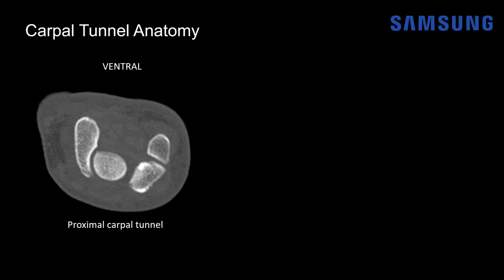Let's start by looking at the CT appearance of the carpal tunnel. Here we're at the proximal carpal tunnel — this is an axial view of the wrist with bone windows, and this is the ventral side. Here's the radial side where the thumb would be located, and this bone is the scaphoid bone. On the other side is the ulnar aspect, and this bone is the pisiform bone. You can see these twin peaks of bony outcropping.